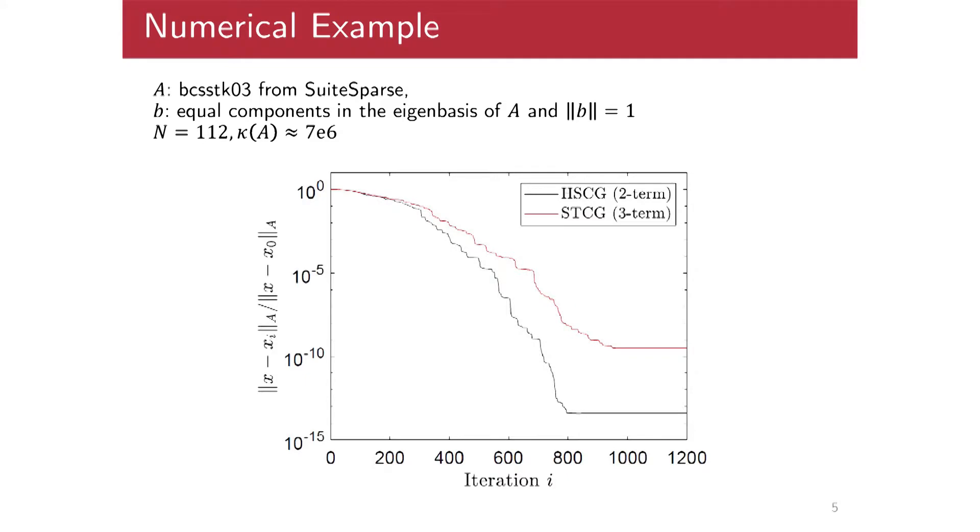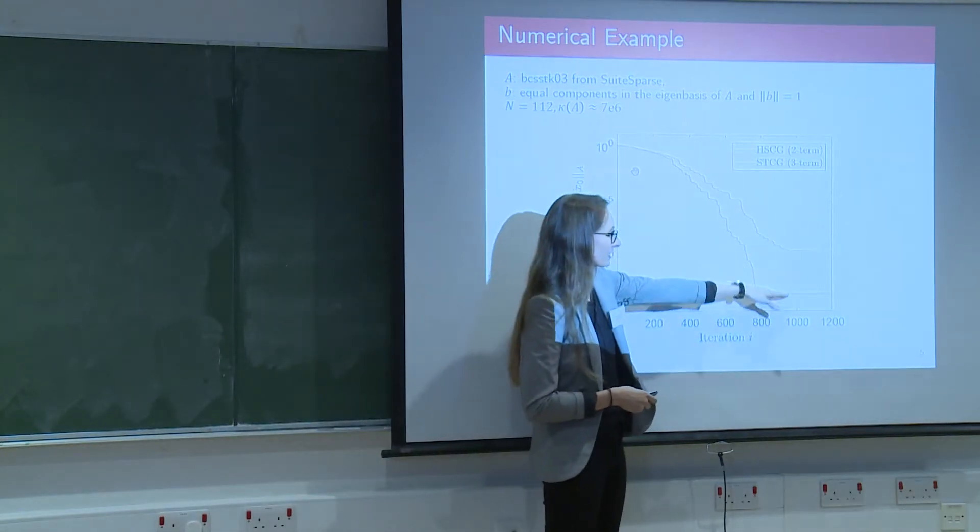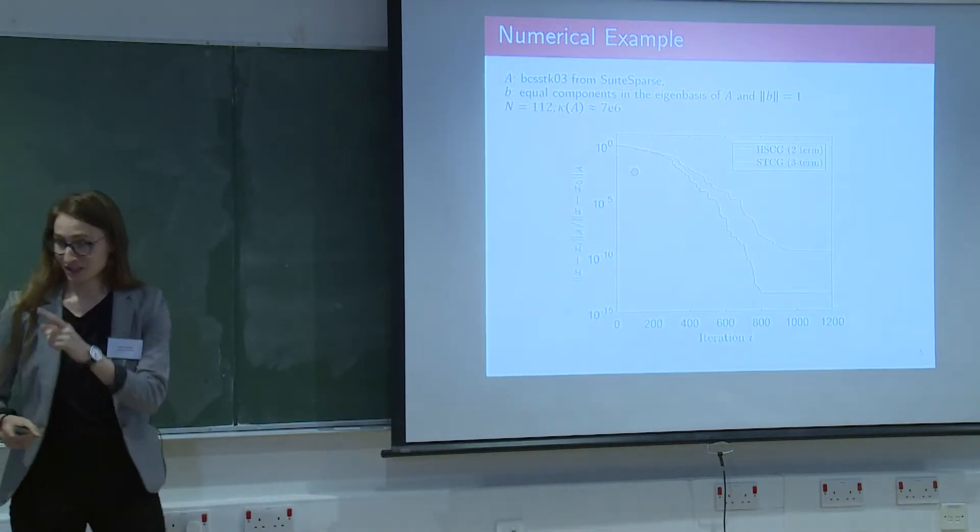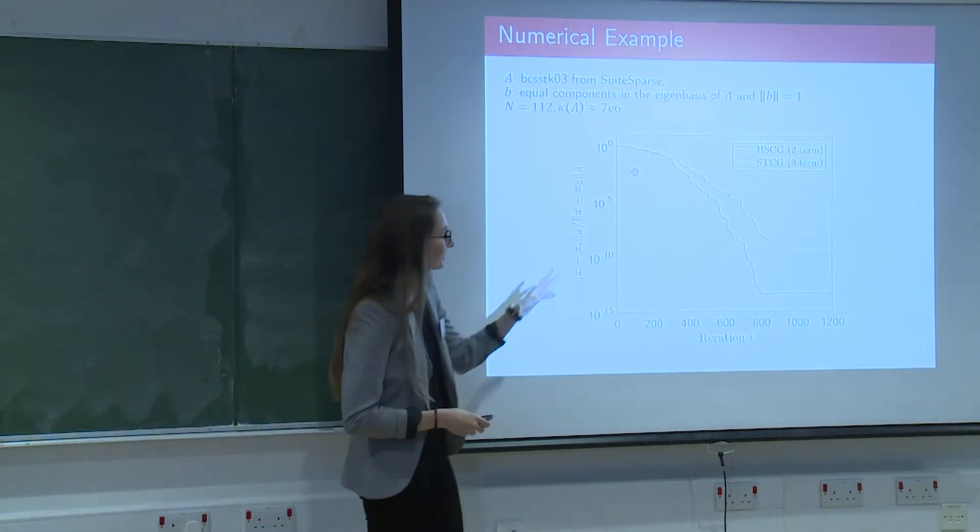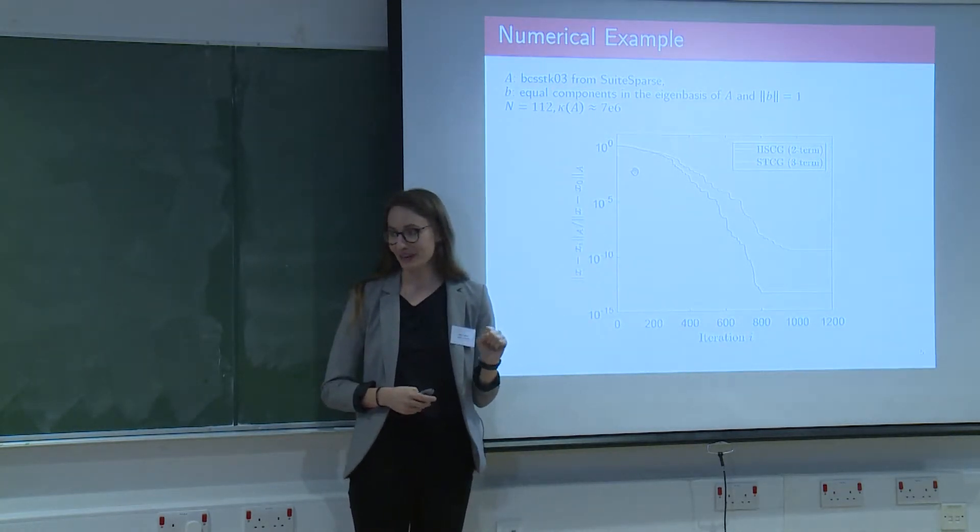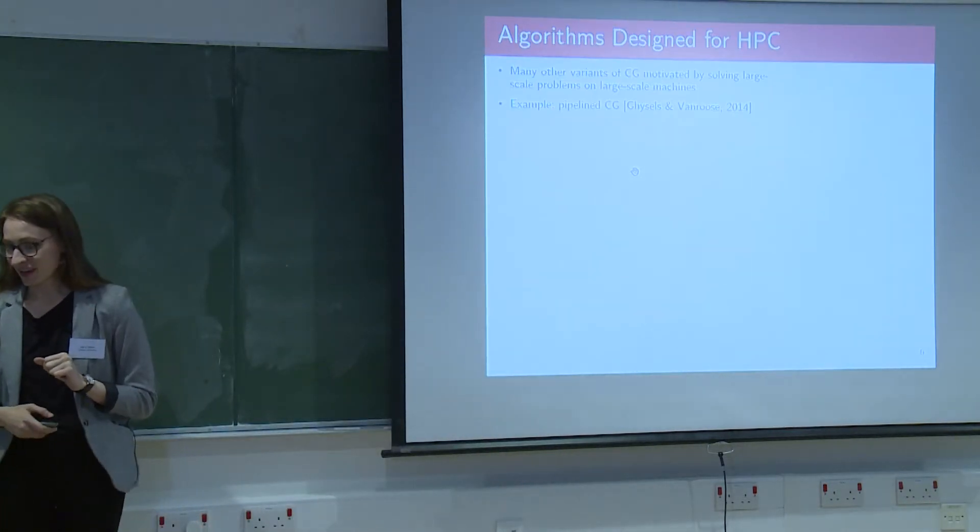Okay, and so here's just a new numerical example run in MATLAB. So this is a small problem from the Sweet Sparse collection. So here I'm plotting the relative accuracy versus the iteration, and the black line is the two-term recurrence version, the red line is the three-term recurrence version. And so you can see that there is a big gap here in the attainable accuracy for this particular problem. And the dimension? Yes, and so this is another good thing to point out, is that even the Hystenes and Stiefel version, this is a hard problem for that. We're taking, you know, more than eight iterations to, eight N iterations to converge here, yes.